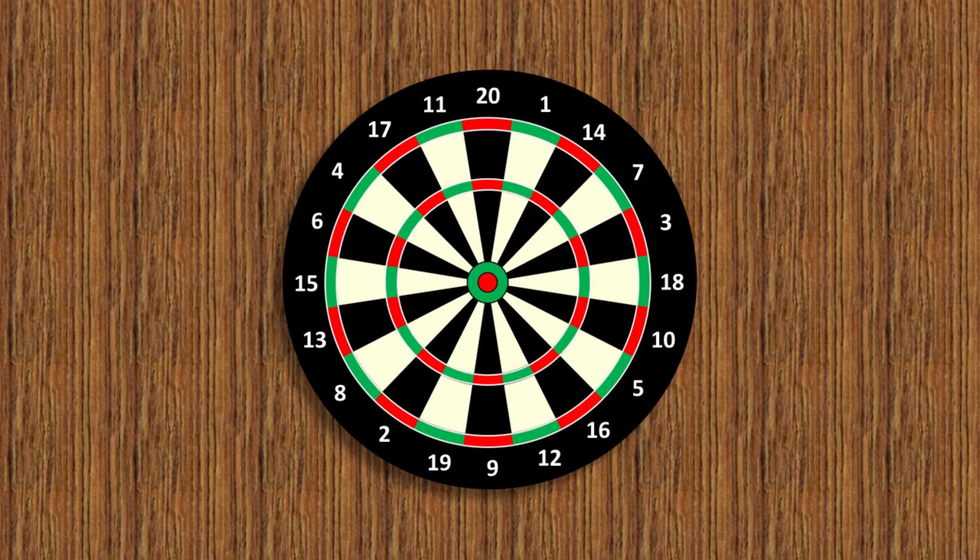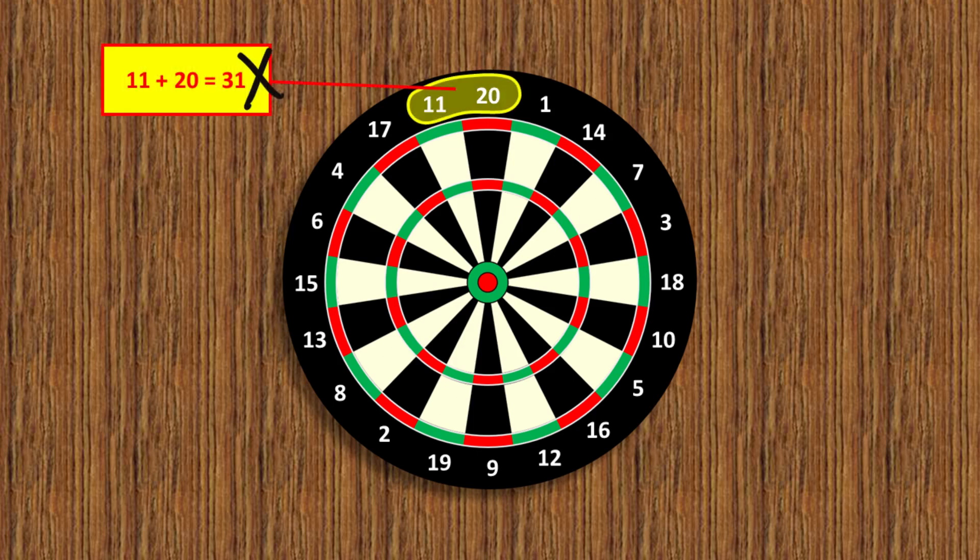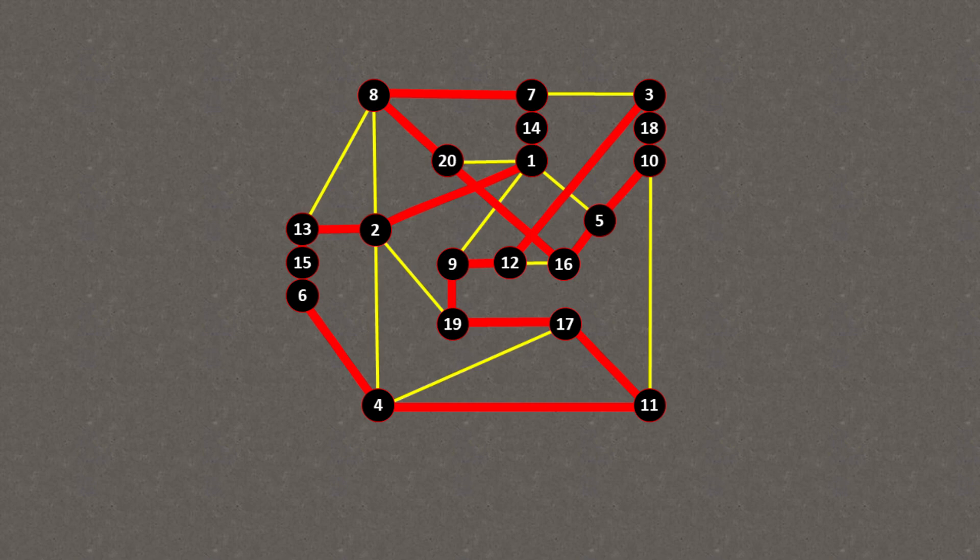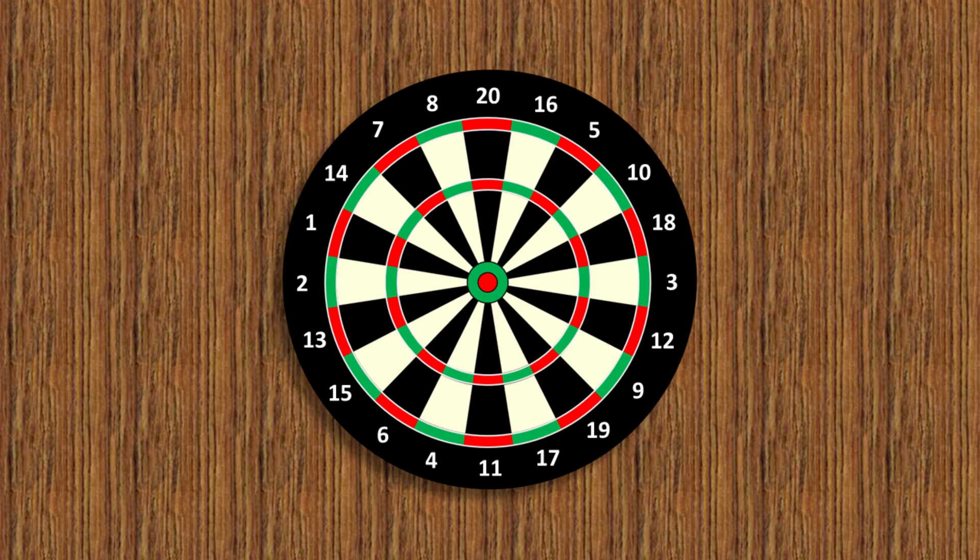This one contains 19 triangular numbers because sadly 11 plus 20 isn't a triangular number, and that's because the path I chose is open-ended. But you can get one better. A closed tour such as this one gives you the maximum of 20 triangular pairs, and there are two other closed tours which I'll leave you to find for yourself.